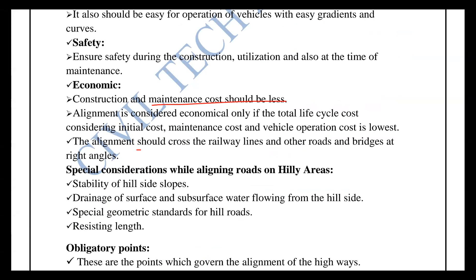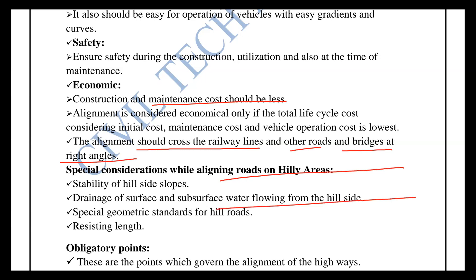An important point is that the alignment should cross railway lines, other roads, and bridges at right angles. We can cross the railway track and cross the road perfectly at right angles.